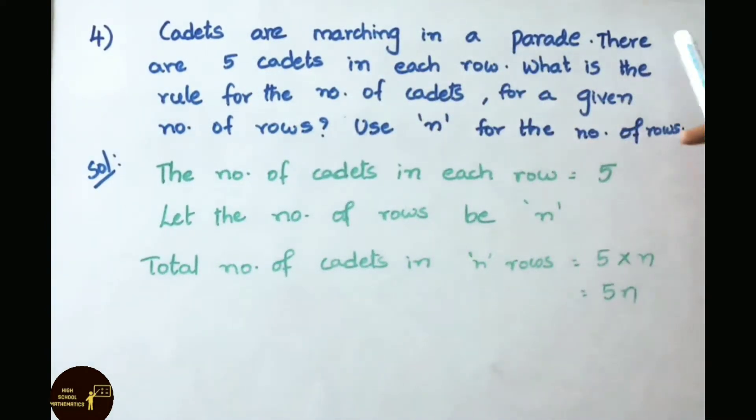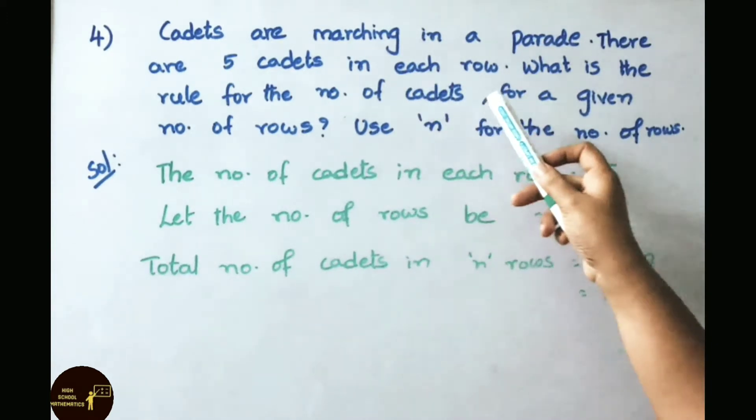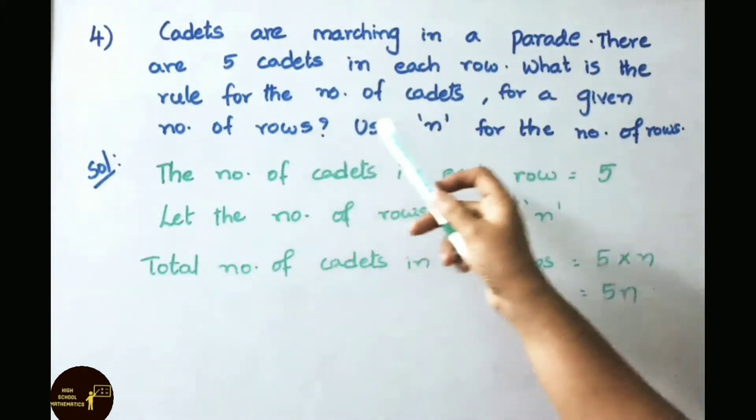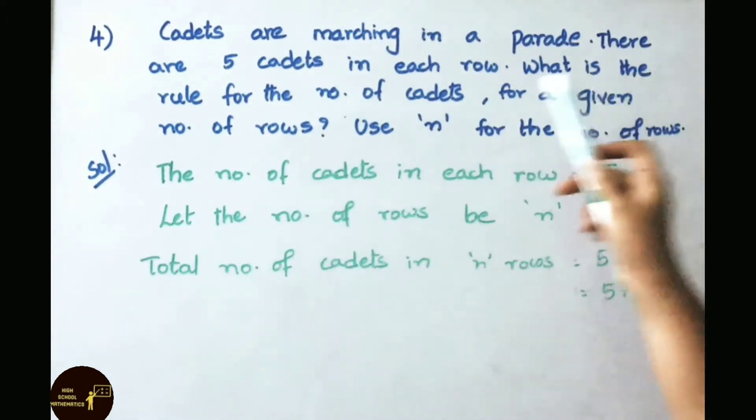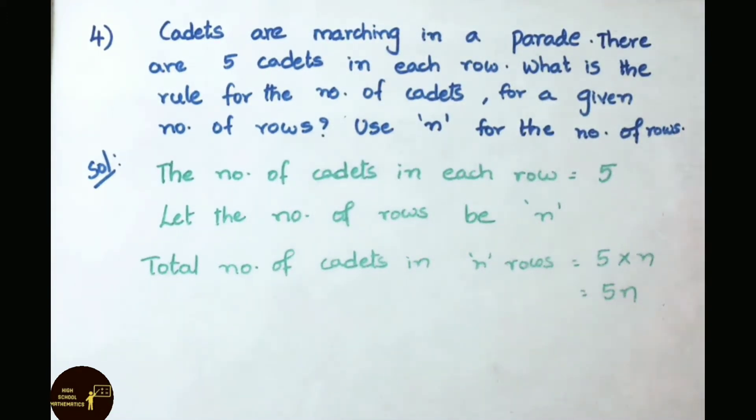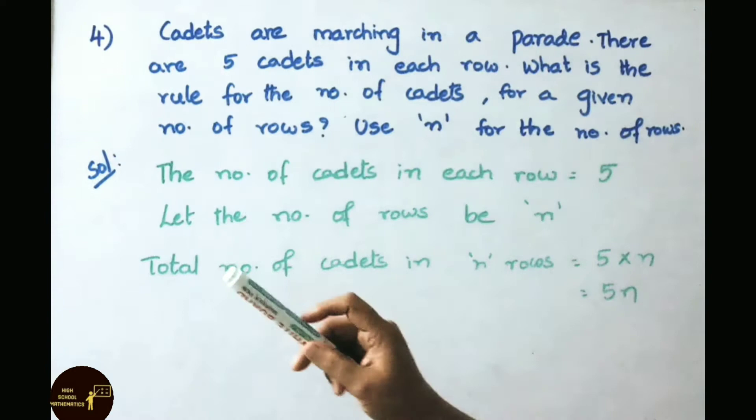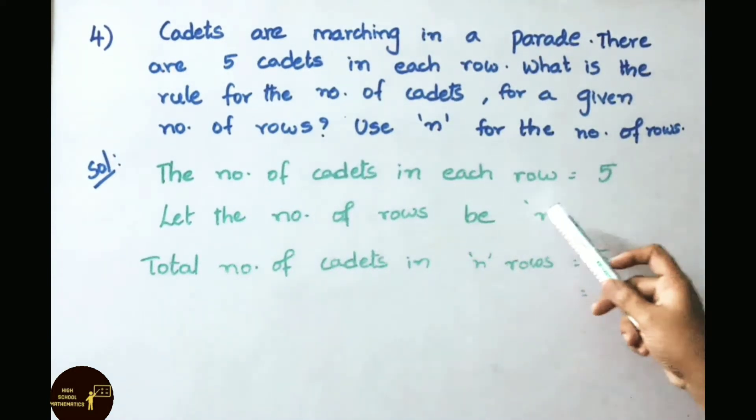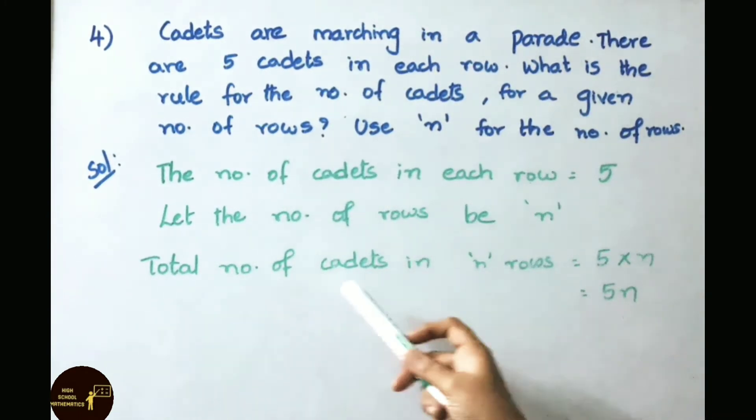Let us see question number 4. Cadets are marching in a parade. There are 5 cadets in each row. What is the rule for the number of cadets for a given number of rows? Use N for the number of rows. The number of cadets in each row is 5. Let the number of rows be N. Therefore, total number of cadets in N rows equals 5 into N, that equals 5N.